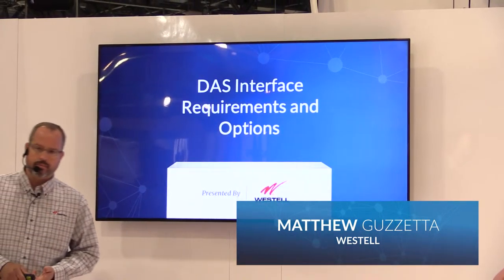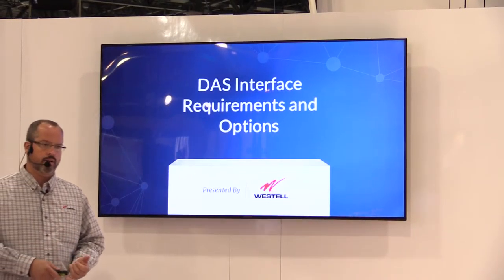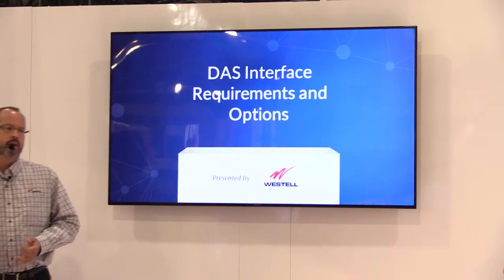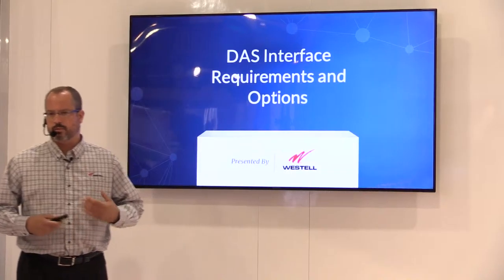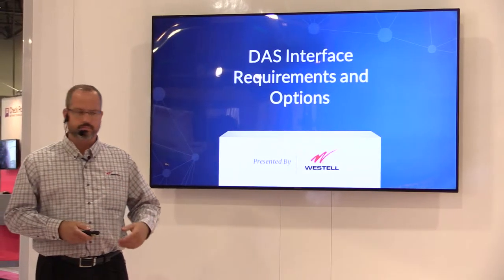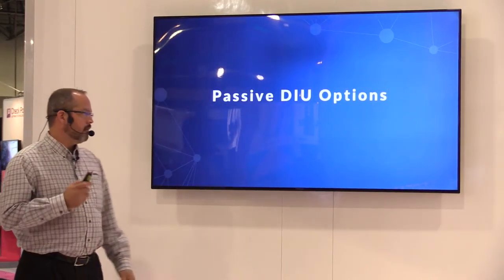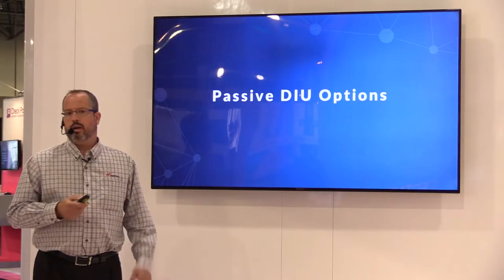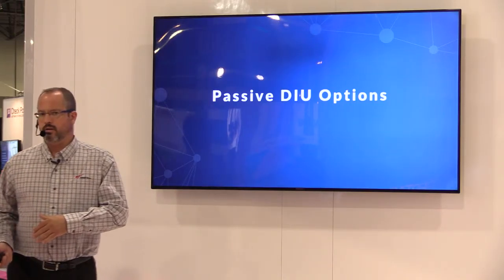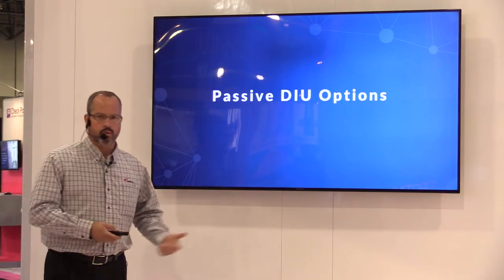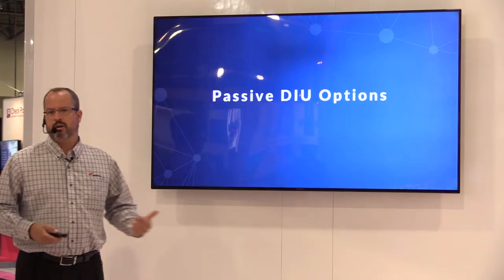We're going to talk a little bit about DAS interface options when you're working with either an indoor in-building DAS system or an ODAS. On most occasions with those types of installs, you're going to need to do some conditioning of the RF signal before you're applying it to the fiber DAS. First, we're going to talk about some passive DIU options, and some of the stuff that we talk about during the passive also applies to the active. Some of the decisions that you make are going to be based on the same criteria.